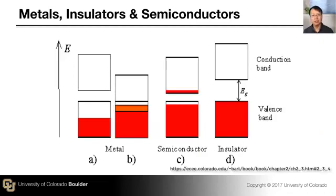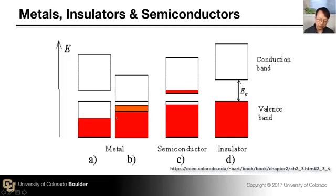Here is a simple energy band diagram. A metal may or may not have a band gap. In one case there is a band gap; in another there is no band gap. But in either case, it features at least one partially filled energy band. In one figure the lower band is partially filled; in the other there is no band gap and one large energy band that is partially filled. In both cases, the solid is a metal or good conductor.